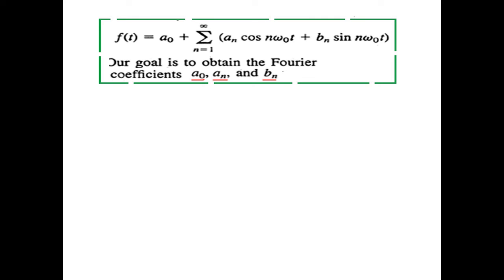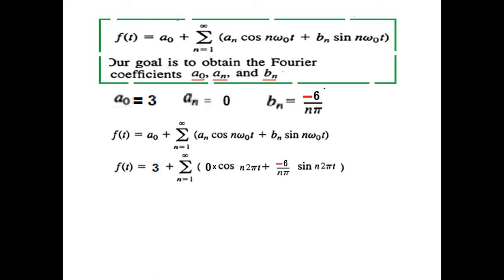Okay, so, if we now go back to get the final equation, we know the values of the coefficients, a₀ was 3, aₙ was 0, and bₙ was minus 6 over nπ. So, putting in the above equations, these values, the equation becomes like this, and this term goes, so, this is the equation left, and this can be finally written in this form.